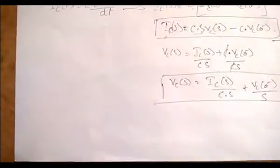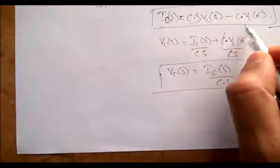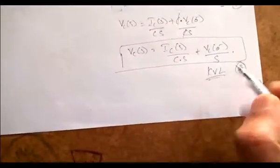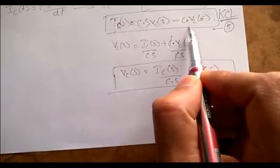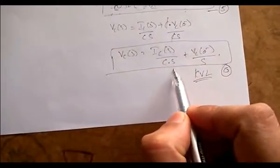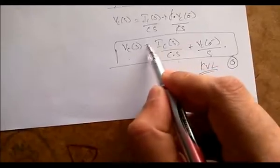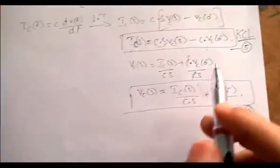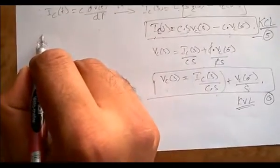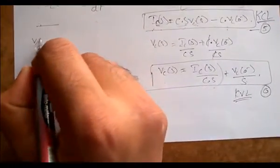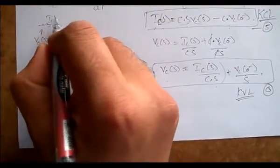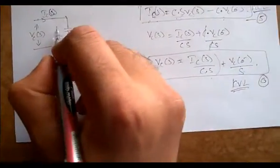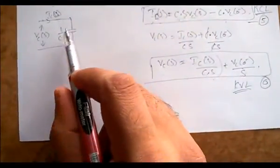Now for the fifth equation we draw the equivalent circuit — this will be the capacitor circuit when you apply transients. The fifth equation is in the form of KCL. The Laplace-domain impedance of the capacitor is 1/(Cs). Current IC(s) equals this expression involving the capacitance term.